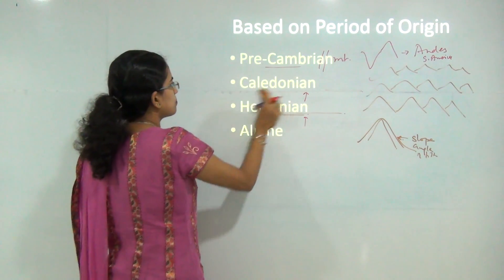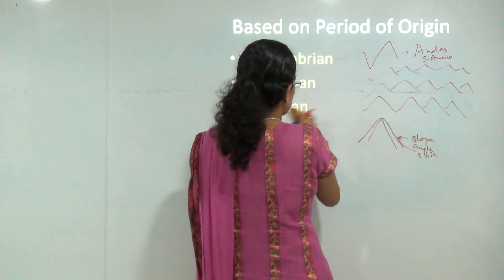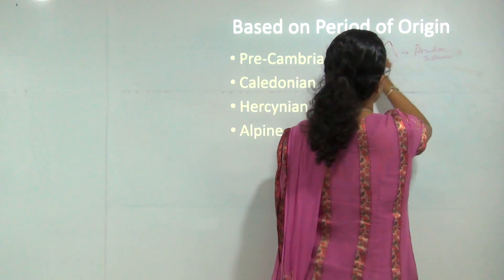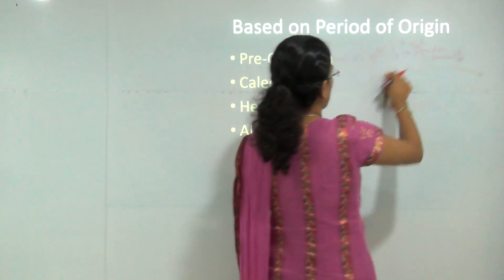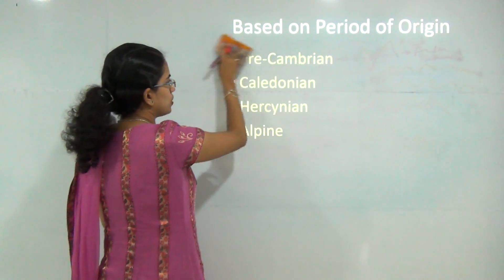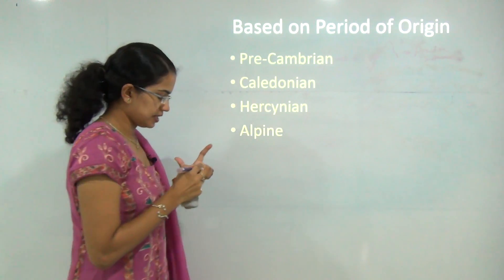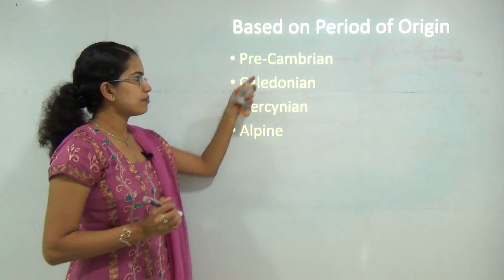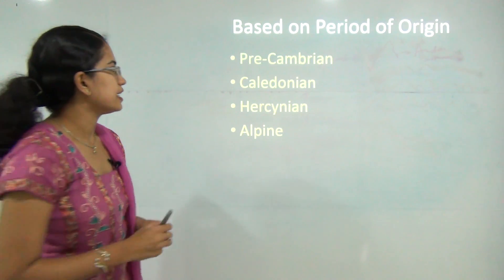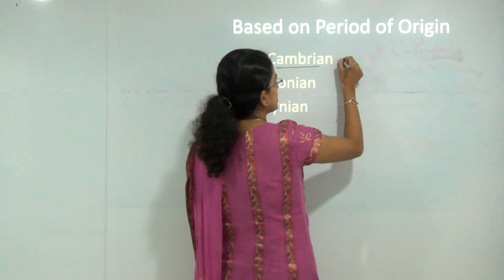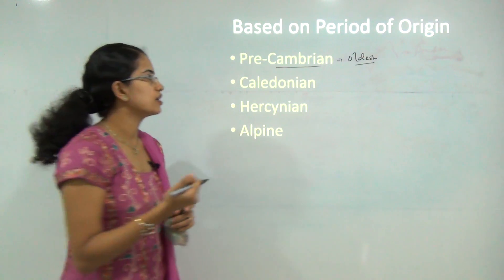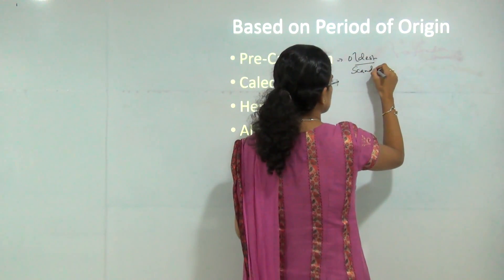The next classification talks about period of origin. To understand this, we must be clear with the geological time scale, which we will cover in a separate session. Here, just to get a brief idea, there are three or four eras we will discuss: the Pre-Cambrian era, the Caledonian era, the Hercynian era, and the Alpine era. The Pre-Cambrian era is the oldest era considered.